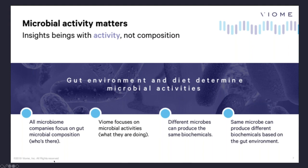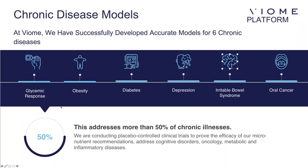It's the activity that's important — not just the composition, not just who's there, but who's there and what they're doing. We can diagnose various chronic diseases just based on the microbiome: obesity, diabetes, depression, IBS, oral cancer. We can actually tell your age within six years based on your microbiome. There's a lot of potential for the microbiome in terms of diagnostics, which we're now just getting into for actual diseases and conditions.